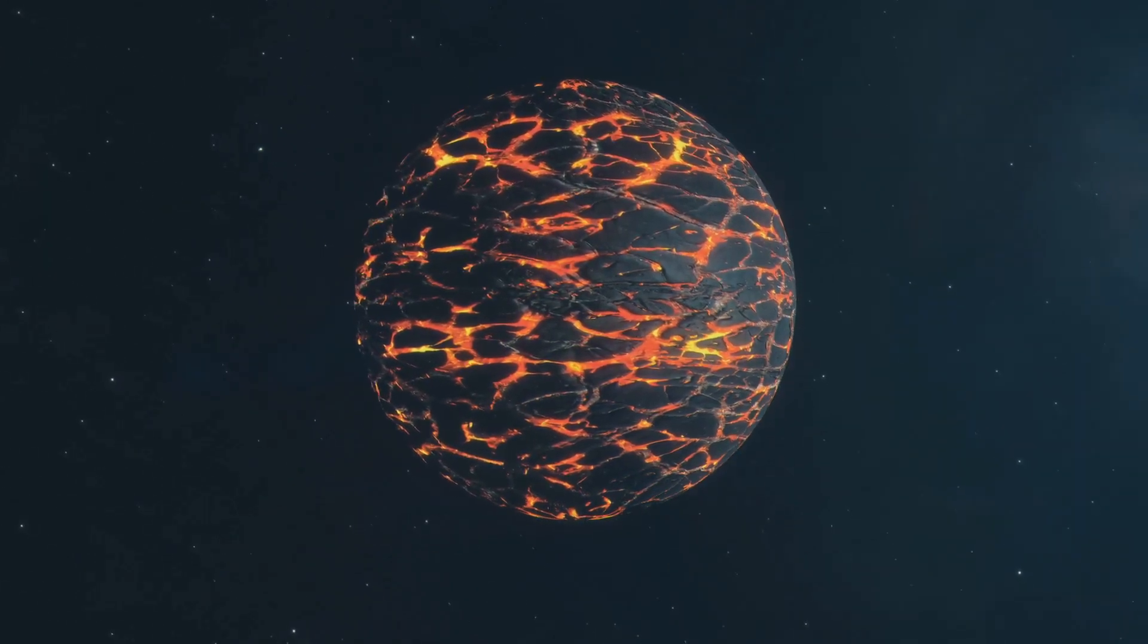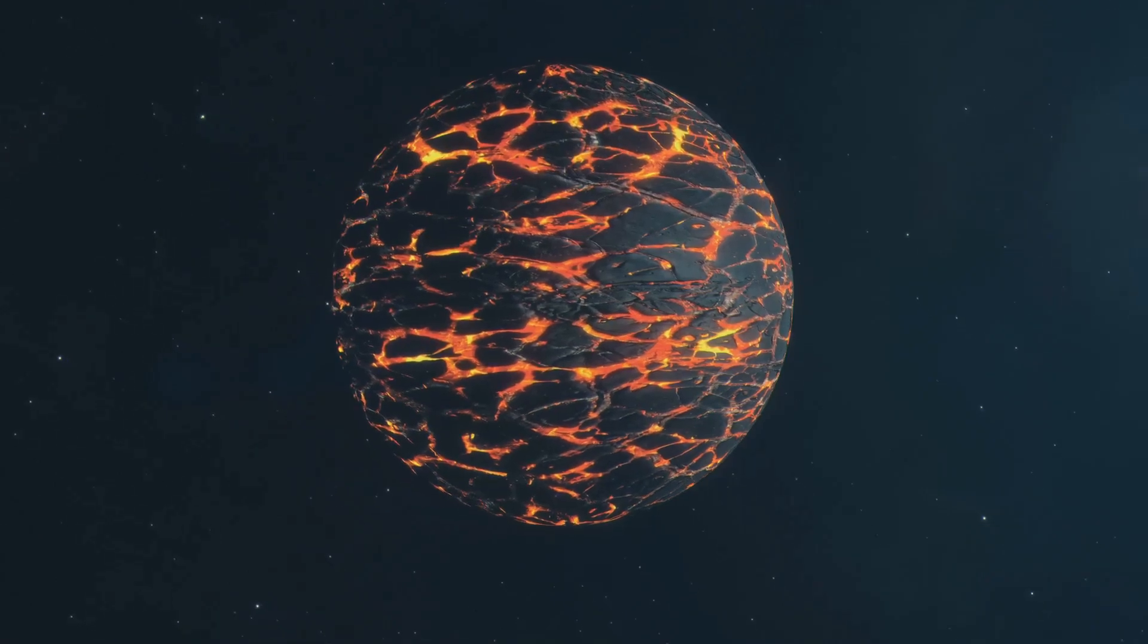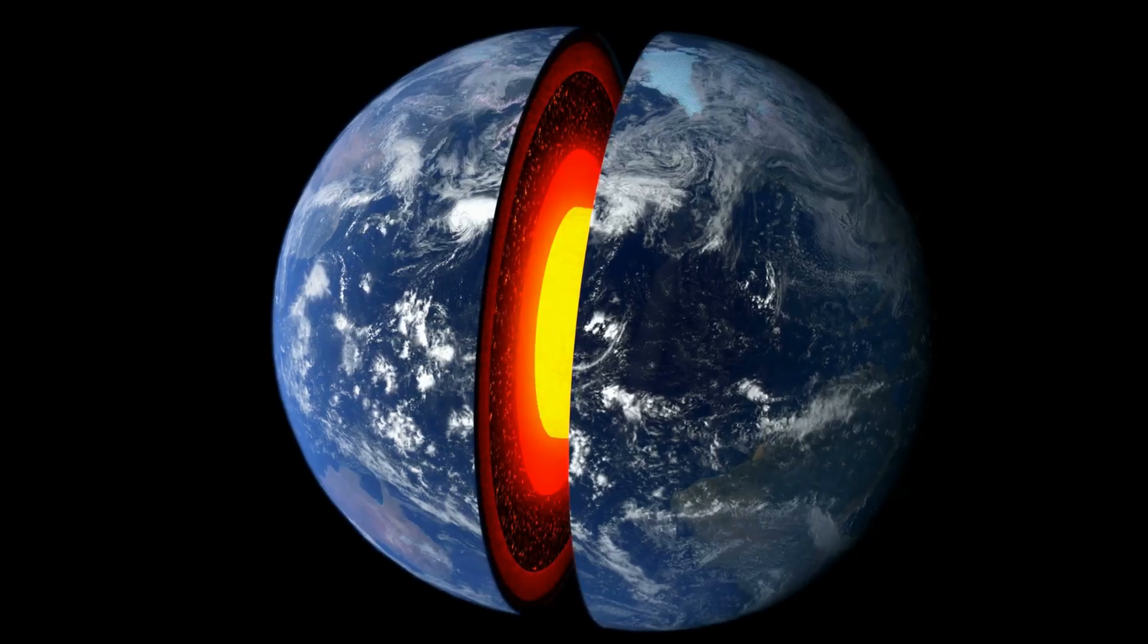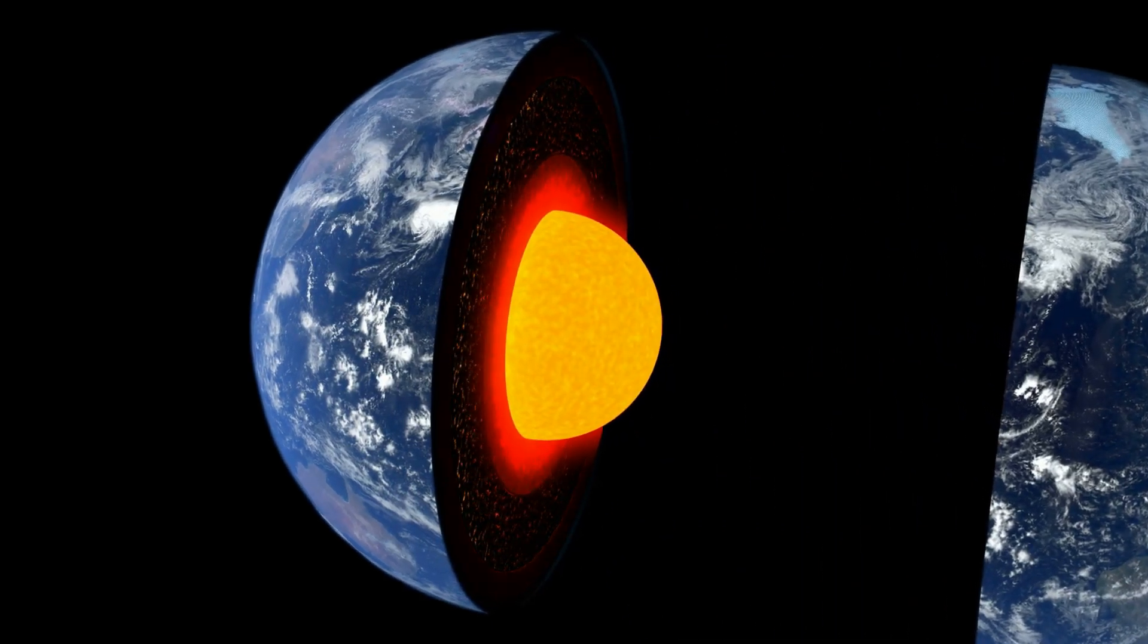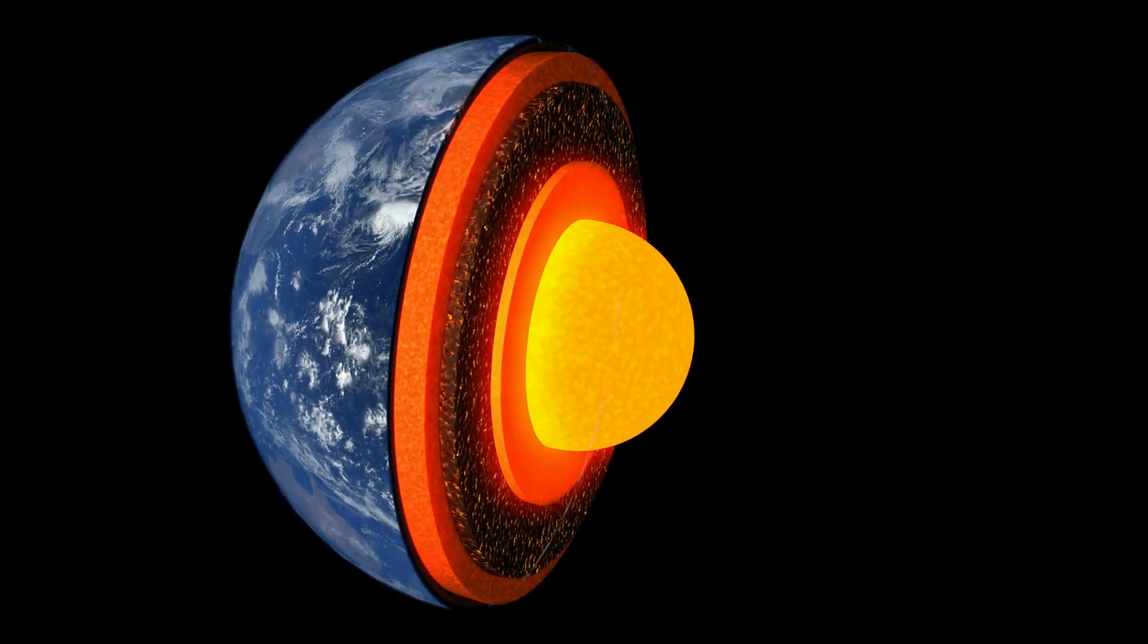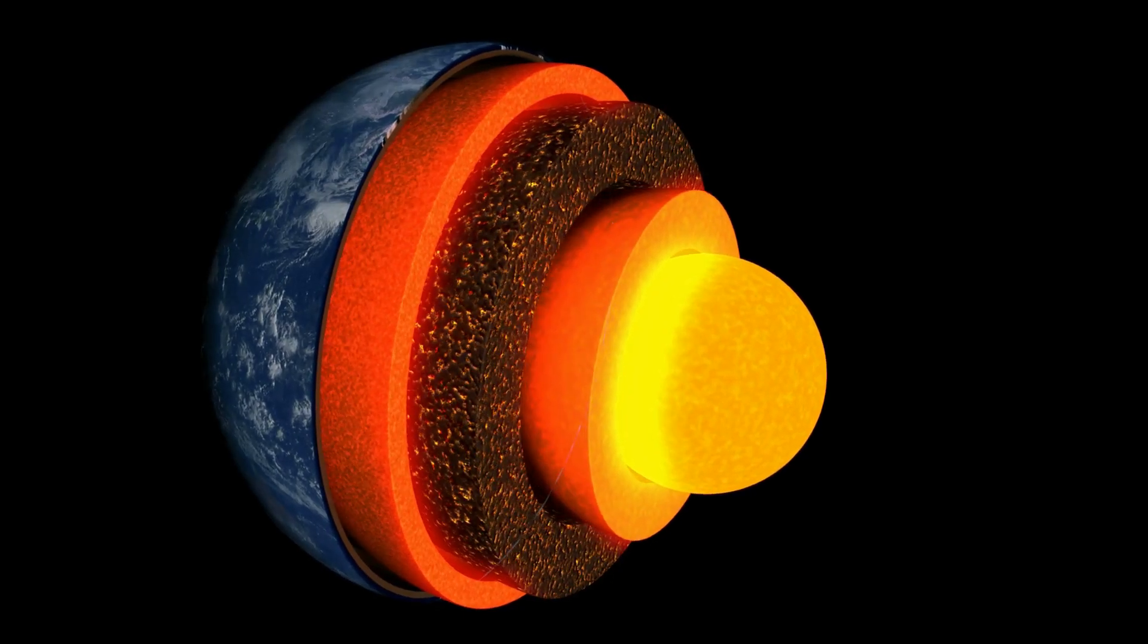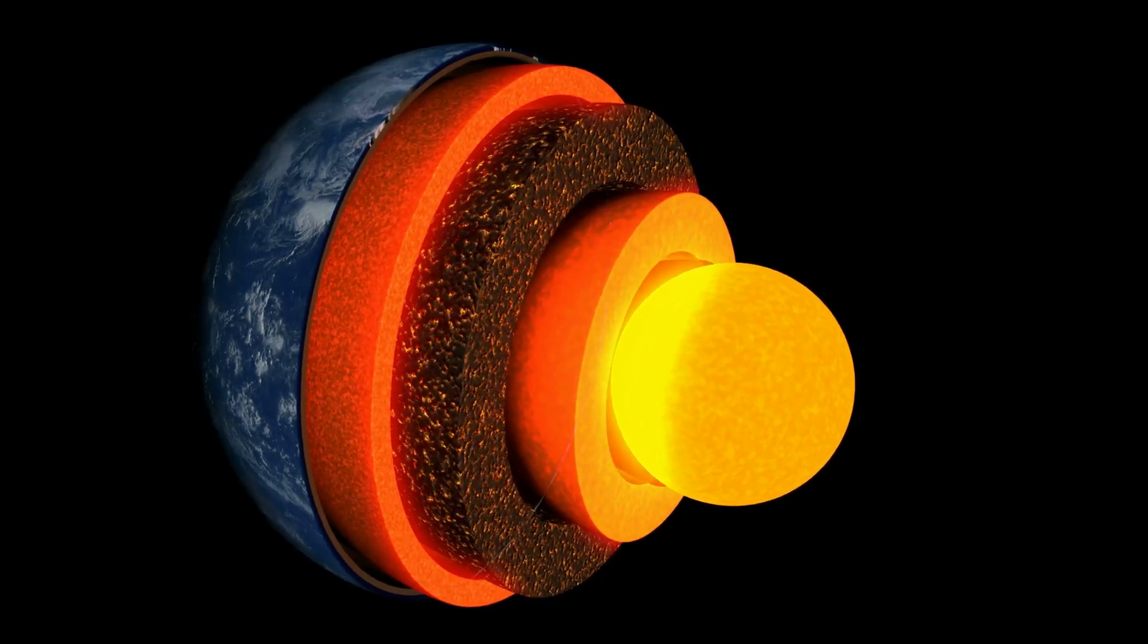The process of differentiation didn't stop there. It was just the beginning of a complex journey that shaped our planet. The Earth's interior continued to evolve over millions of years, eventually forming distinct layers. These layers are crucial to understanding the dynamic nature of our planet.